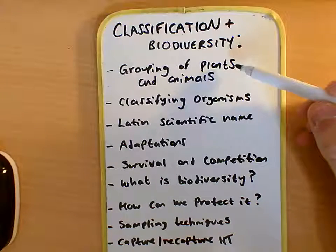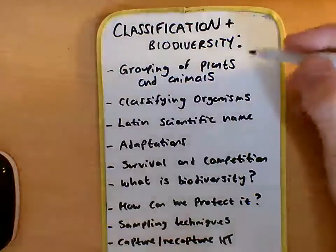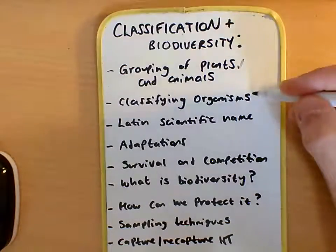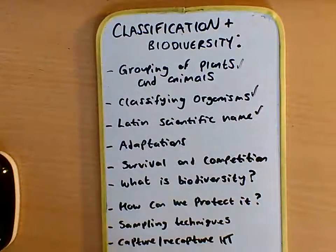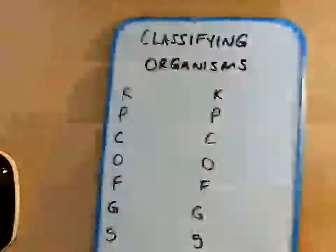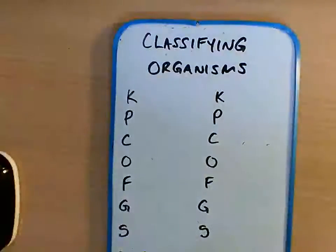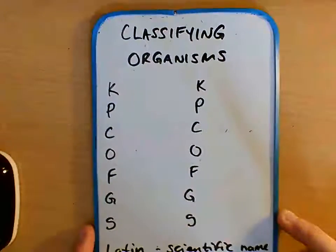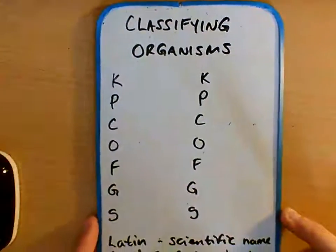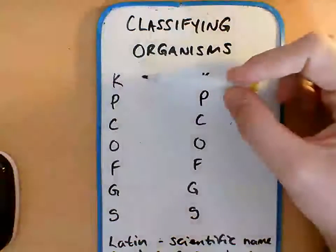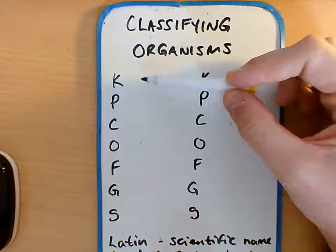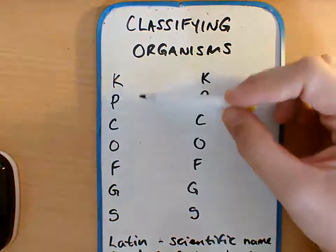In the last video we looked at grouping of plants and animals. We're now going to look at classifying animals and the use of Latin scientific names. There's a particular procedure we look at when classifying organisms — we put them into groups, starting with a big group at the top and working our way down.